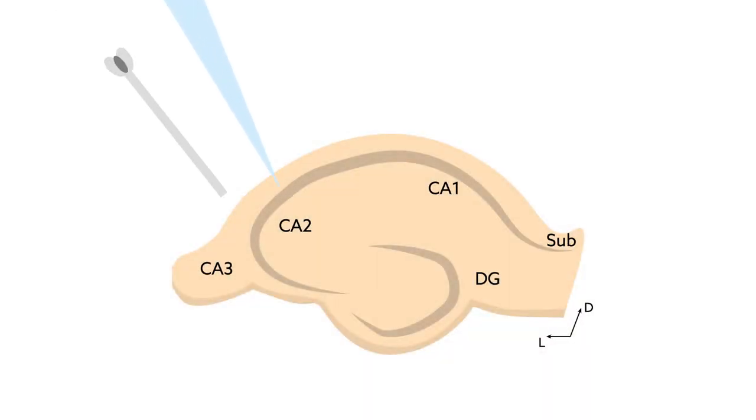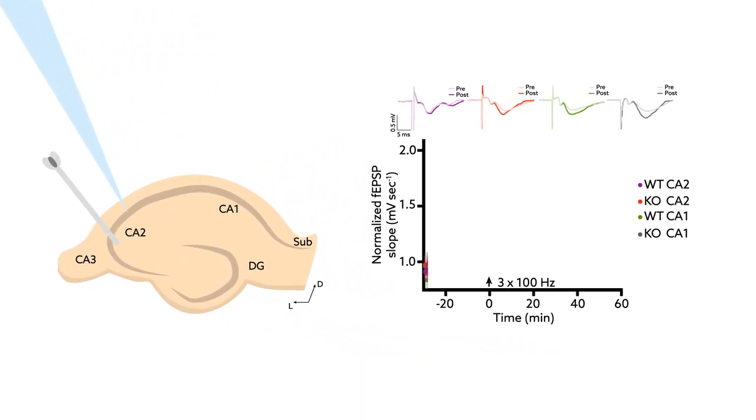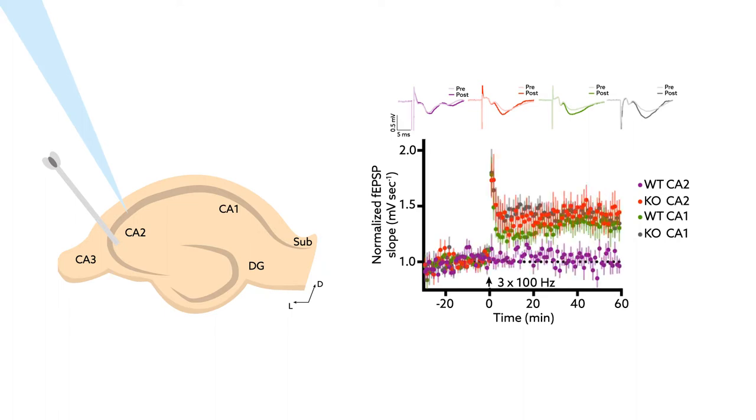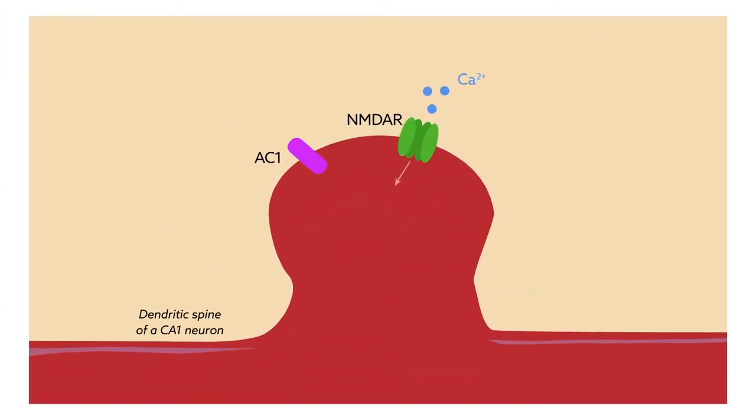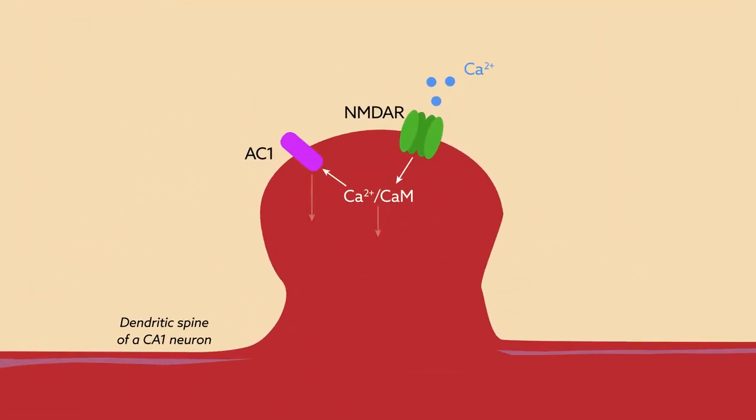Using field potential recordings, the team showed that robust long-term potentiation could be induced in the knockout mice, but not the wild-type controls. Calcium entry into neurons is a crucial step in synaptic plasticity and one area in which CA2 neurons show different properties than their plastic neighbors in CA1.